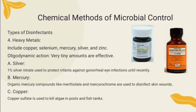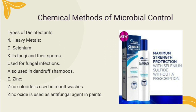A number of heavy metals have antimicrobial ability. Silver is used as silver nitrate in the eyes of newborns to guard against infection by Neisseria gonorrhoeae, and is also used to cauterize wounds. Copper is used as copper sulfate to retard the growth of algae in swimming pools, fish tanks, and reservoirs. Mercury — specifically organic mercury such as merthiolate and mercurochrome — is used to disinfect skin wounds. Zinc is useful as zinc chloride in mouthwashes and as zinc oxide as an antifungal agent found in paints. Heavy metals are believed to act by binding with sulfhydryl groups on cellular proteins. Selenium kills fungi and their spores and is used in anti-dandruff shampoos.